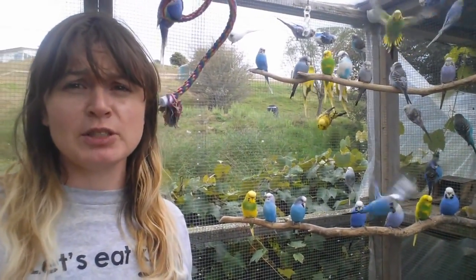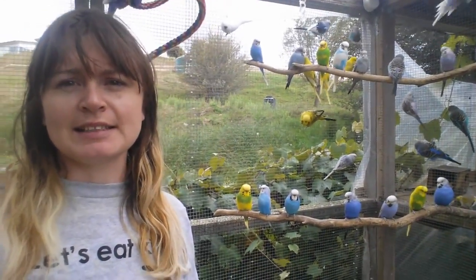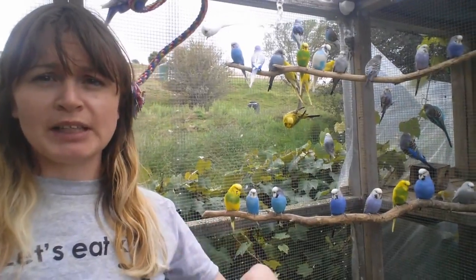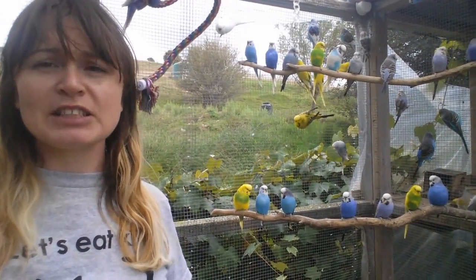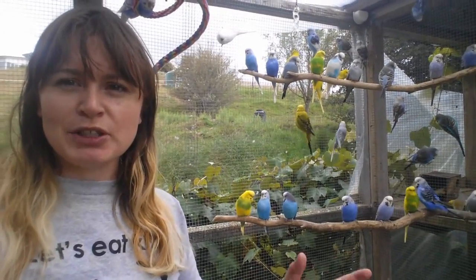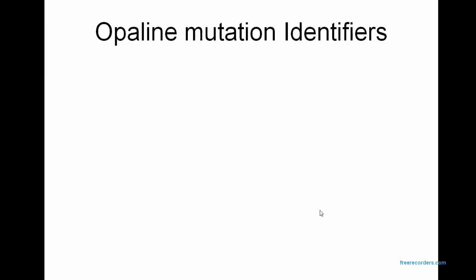Hey guys, it's Karen and today I wanted to talk about one of my favourite mutations, which is the Opaline mutation in Budgerigars. It's one of my favourites because it brings out such a beautiful colour, brings that body colour straight into the wing colour and just sort of spreads that nice colour around. I hope you enjoy my video today and I hope it's really helpful. So today I'm going to talk about Opaline mutation and here are some of the main identifiers of the mutation.